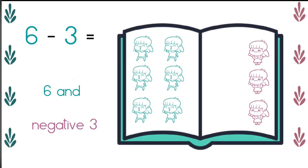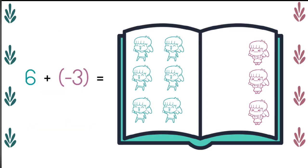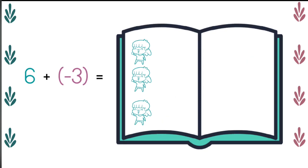This gives us a new problem of six and negative three. When I have six positive and three negative, I can eliminate each pair, positive and negative pair, leaving us with just three happy girls, meaning my answer is positive three.